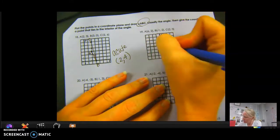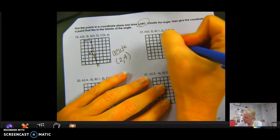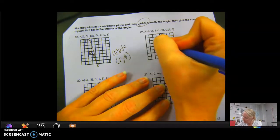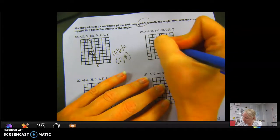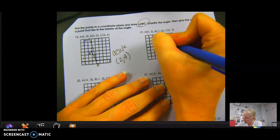6, 2. These go by 2. So 2, 4, 6, 2. That is A. Negative 1, negative 2. That's B. And then 2, 3. That is C.